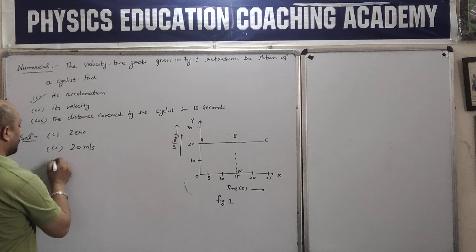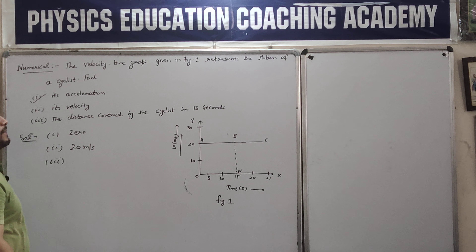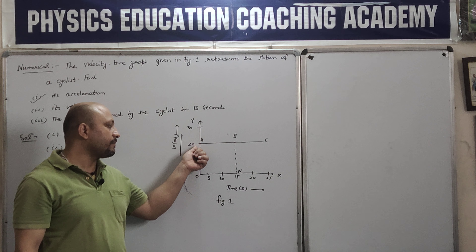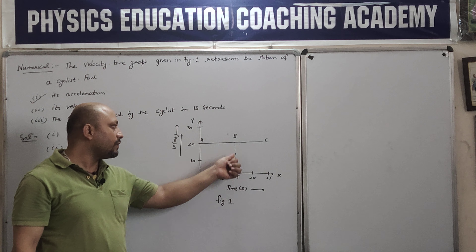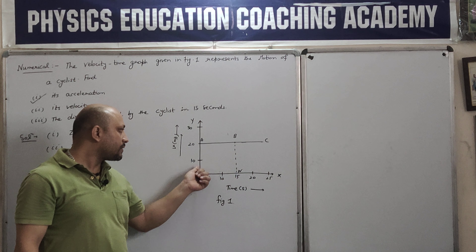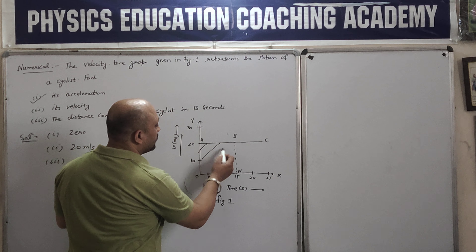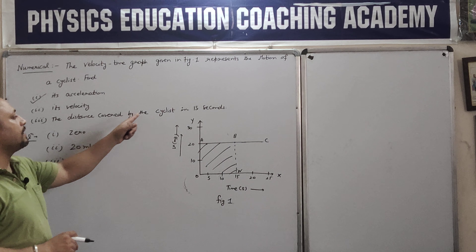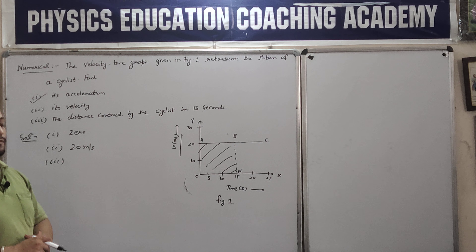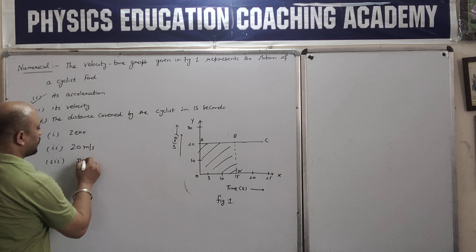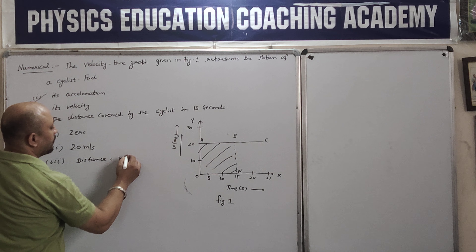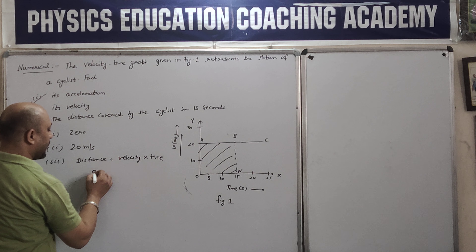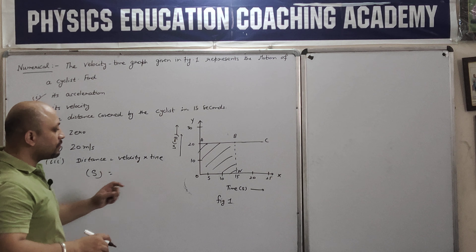Third question: the distance covered by the cyclist in 15 seconds. At t = 0 the velocity was 20 meter per second, and at t = 15 it reached point B. The cyclist covered this area in these 15 seconds. So what do we need to find? How much distance the cyclist traveled in 15 seconds. The formula for distance that you all know is: distance = velocity × time.